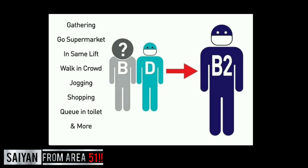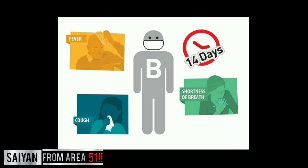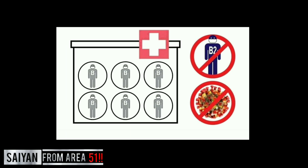Once D goes out, she might contact, meet, or pass by B. Now D becomes a new B — we can say that D is now B2. The main objective of lockdown and quarantine is using the time to find group B. The incubation period for coronavirus is two weeks. Within two weeks, group B will show symptoms, allowing us to find, quarantine, and treat them, reducing the production of new group B as B2.